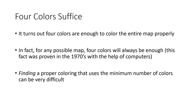It turns out that in any physical map, four colors are enough to color the entire map properly. The word 'properly' means that if two regions share a border, they must have different colors. Any possible map, four colors are going to be enough. That was actually proved in the 1970s with the help of computers.